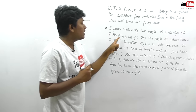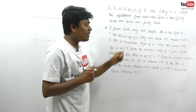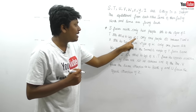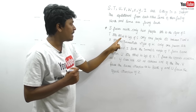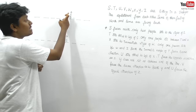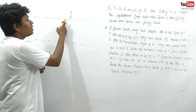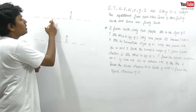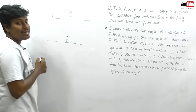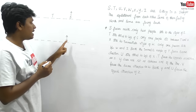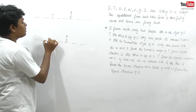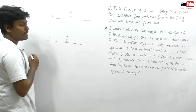T sits third to the left of S. So on S's left-hand side at the third place, T is sitting. Counting 1, 2, 3 to the left of S, T is placed at the 3rd position. Similarly in condition 2, S's left-hand side: 1, 2, 3 — at the third place T is sitting. We do not yet know whether T is facing north or south.